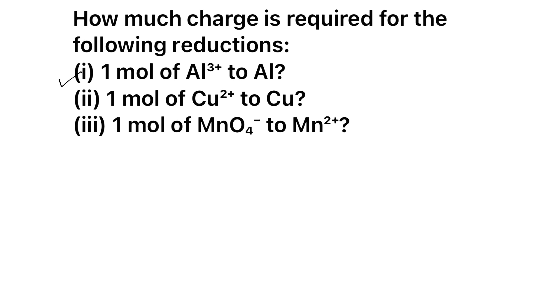Question number one is 1 mol of Al³⁺ to Al. What is the reduction happening here? You can see Al³⁺ is becoming Al. So here what is the charge? 3 plus. And here what is the charge? Zero charge. So how many electrons will be there? 3 electrons, right?